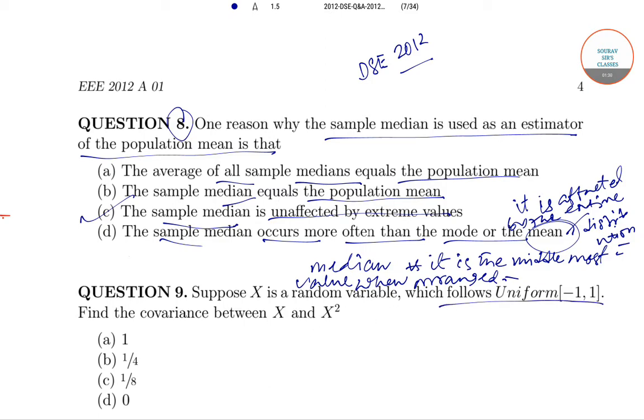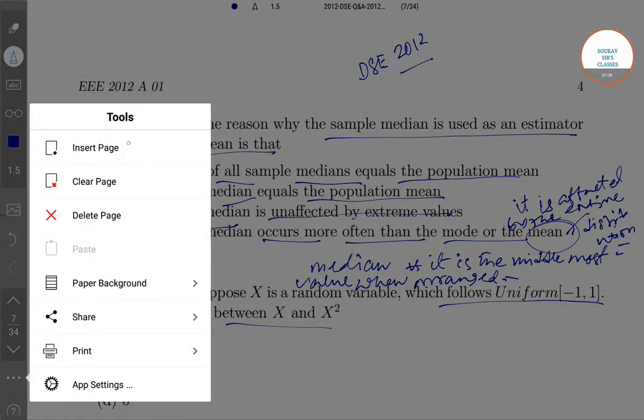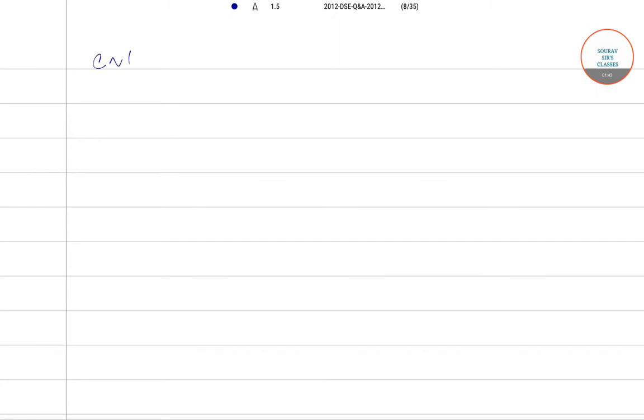So basically, our covariance is between X and X², where X lies between -1 to 1.